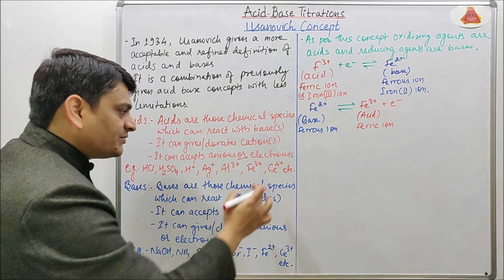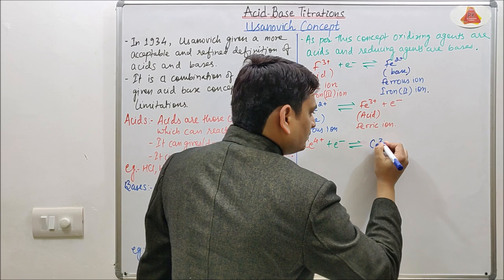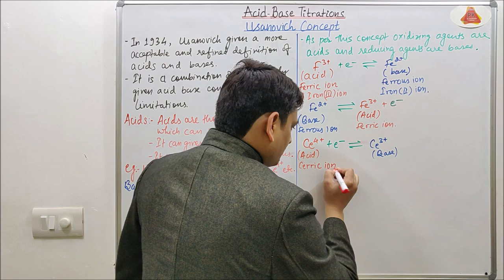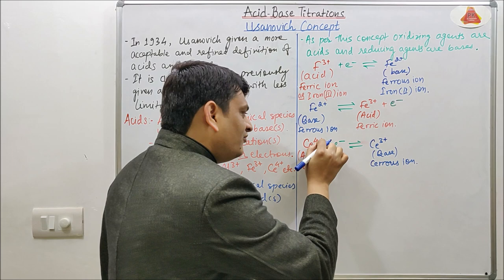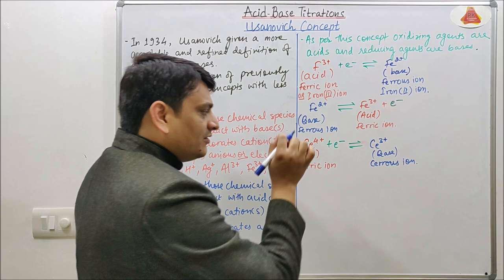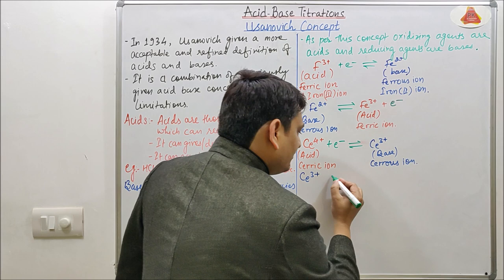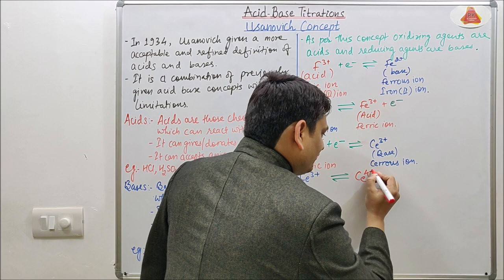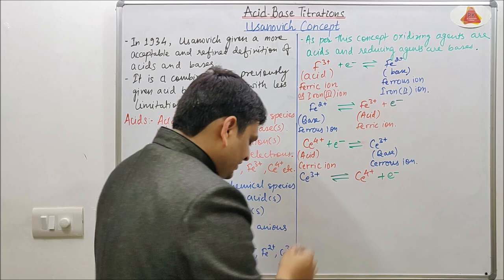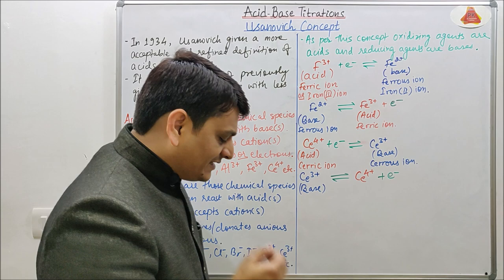Similarly, taking the example of Ce⁴⁺: Ce⁴⁺ is accepting one electron and is converted into Ce³⁺, which is why Ce⁴⁺ acts as an acid. If we take the example of Ce³⁺, it will give one electron and be converted into Ce⁴⁺. So Ce³⁺ acts as a base and Ce⁴⁺ acts as an acid.